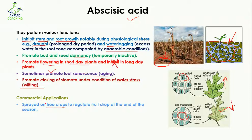A commercial application of abscisic acid is seen in tree crops. When abscisic acid is sprayed on tree crops, it regulates fruit drop at the end of the season — allowing fruit to drop when the season ends, while stopping fruit drop during the season.